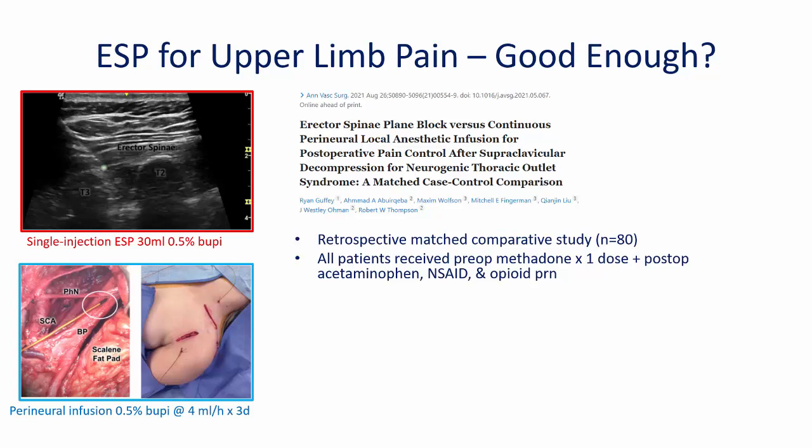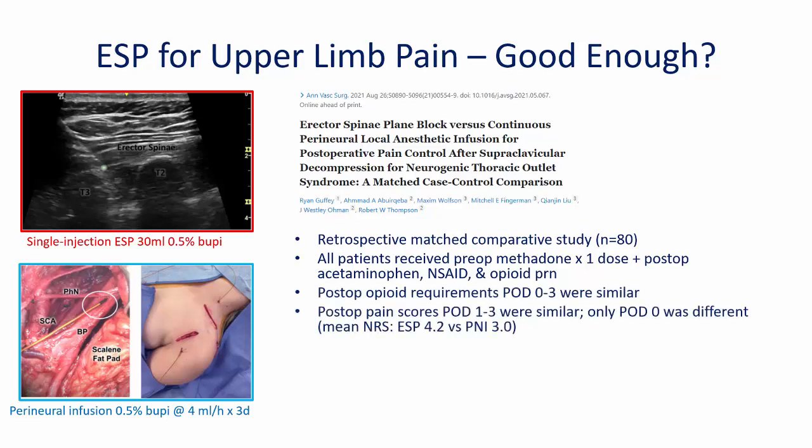A recent study by Guffey and colleagues in St. Louis, Missouri examined their experience using ESP blocks for postoperative analgesia in patients undergoing decompression for thoracic outlet syndrome. Their standard of care was surgical placement of a perineural catheter alongside the brachial plexus with local anesthetic infusion for three days. Between May 2019 and January 2020, they performed single-injection ESP blocks between T2 and T3 in 40 patients, matched to 40 patients who received standard care. Opiate consumption during postoperative days 0 to 3 was similar, and postoperative pain scores were not significantly different, except on the day of surgery.